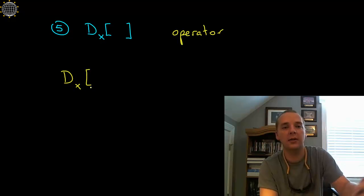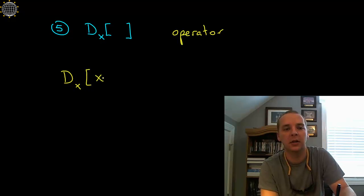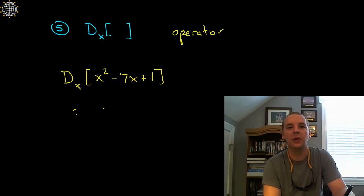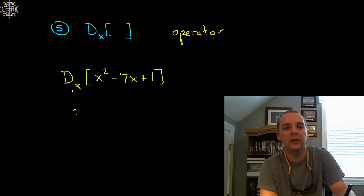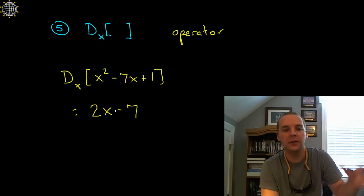The way you'd use it is D sub x of an expression. You just type whatever you want to take the derivative of in here. Let's say x squared minus 7x plus 1. That's not the derivative. That's what we want to take the derivative of. Its derivative would be 2x minus 7 using basic derivative rules.